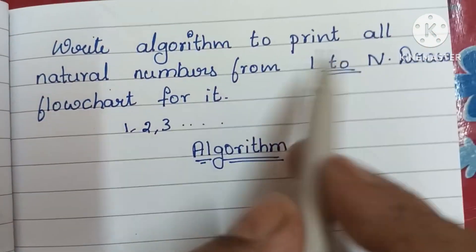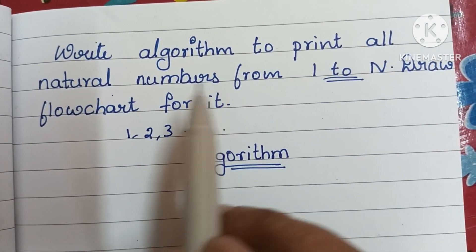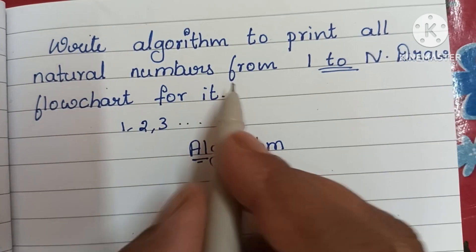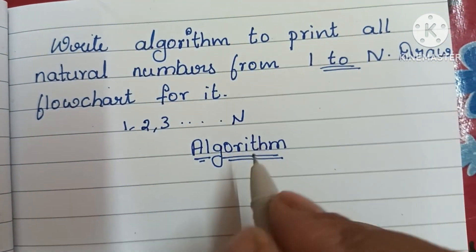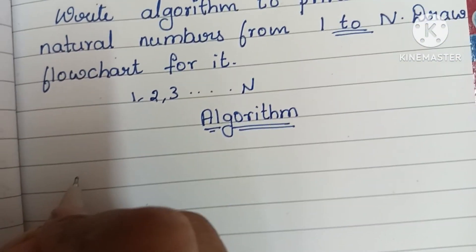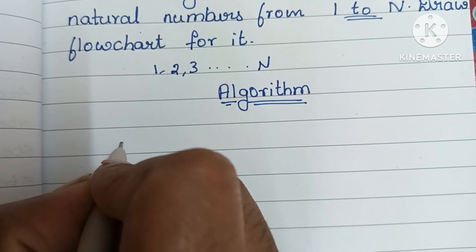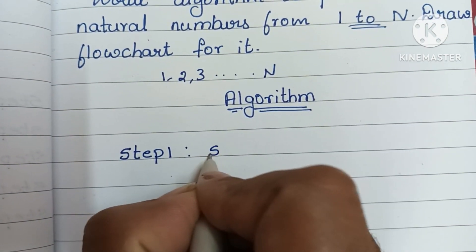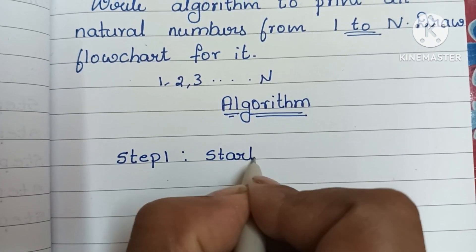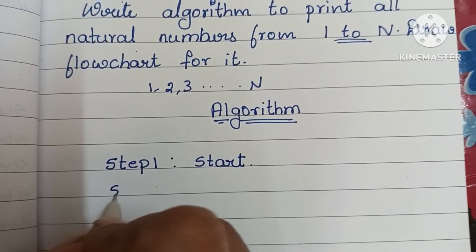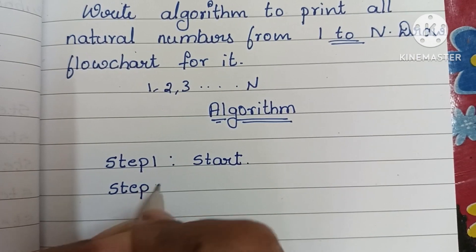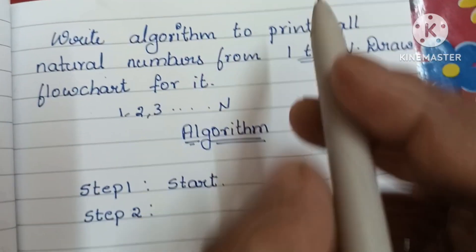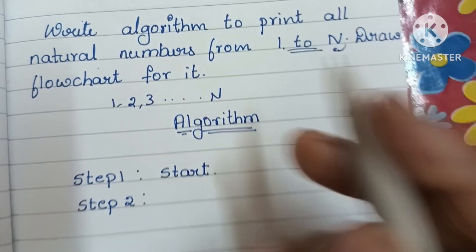In this question we have to print all natural numbers from 1 to N. An algorithm always starts with a START statement, so step one is START. In step two, we have to print all natural numbers from 1 to N.